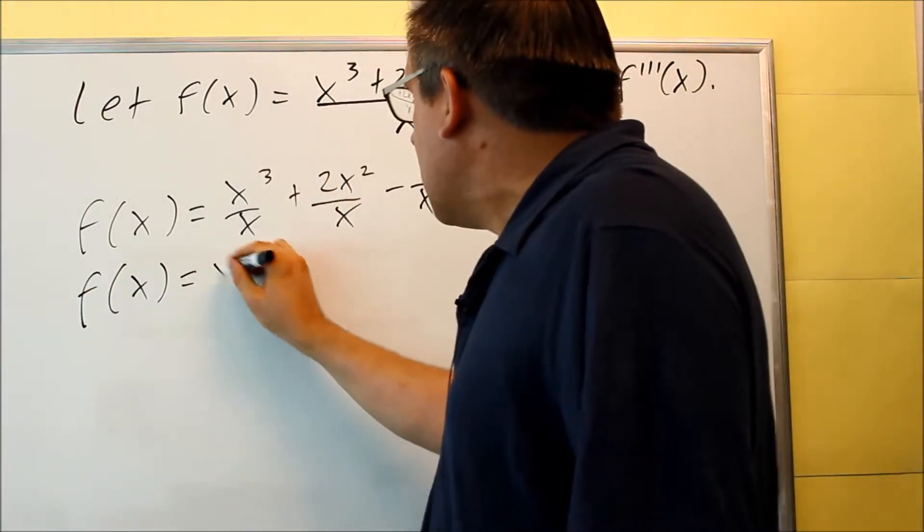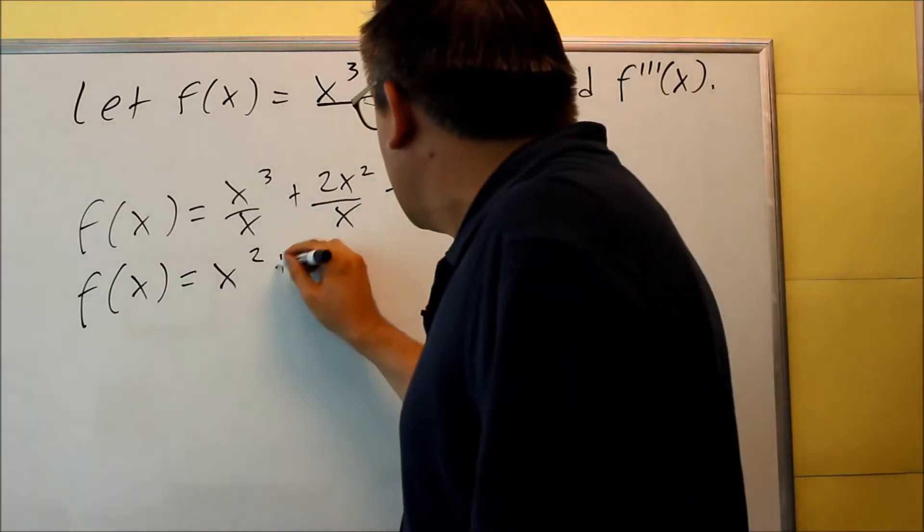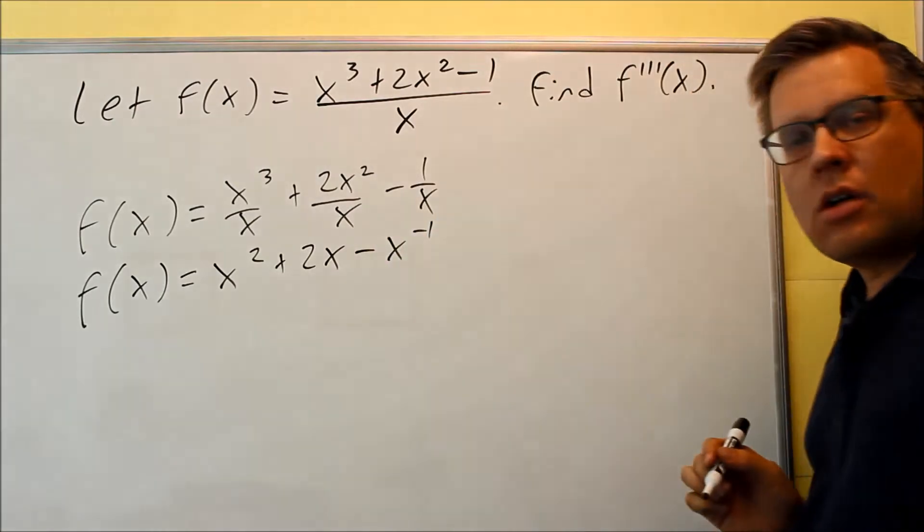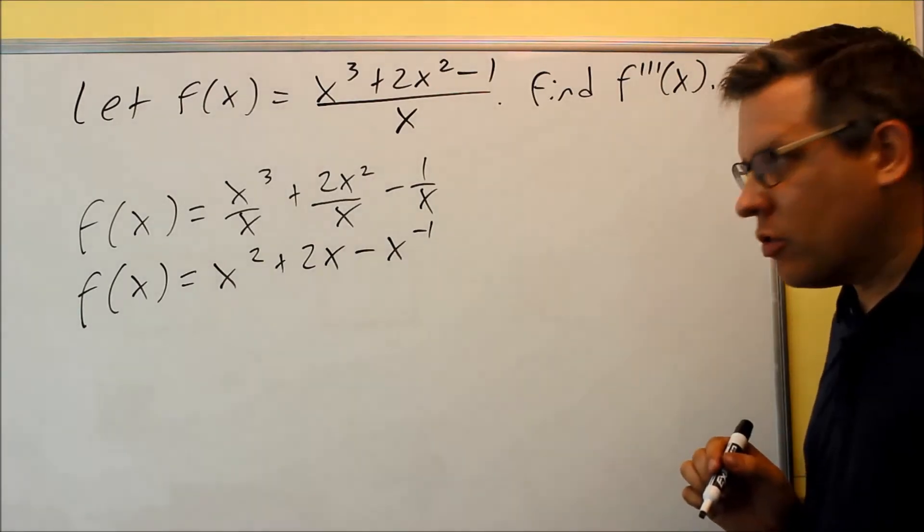Okay, so the x I can cancel out there and I get x squared. For this one, I can write that as 2x. And then this one, I'm going to write as x to negative 1 power. So that way, I can make it ready to use the power rule.